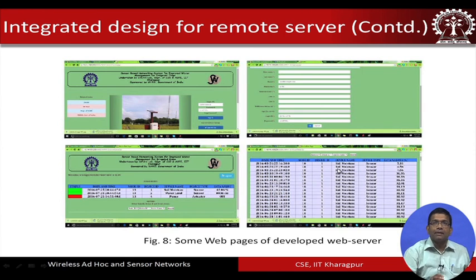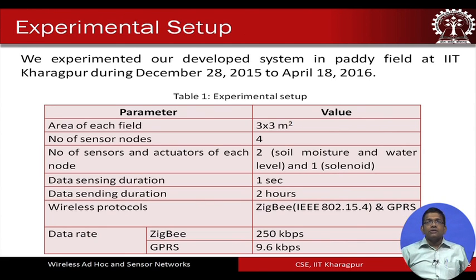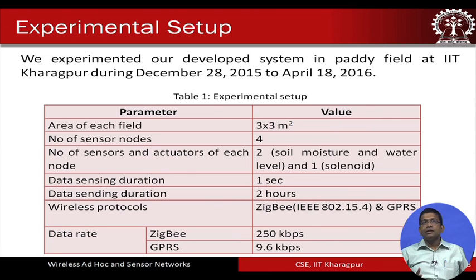After login and registration, users can see the field data on screen through the portal. The experimental setup was used for study in the paddy field at IIT Kharagpur. Data was collected between December 28, 2015 to April 18, 2016. The area of each field was roughly 3×3 square meters, with four sensor nodes deployed. The actual solution has also been deployed in much bigger fields in a remote village about 20 kilometers from IIT Kharagpur. ZigBee was used for local communication and GPRS for long distance communication.